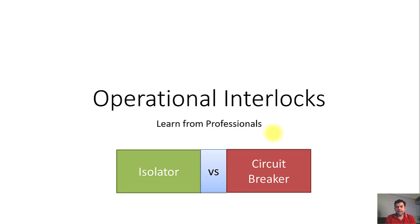Welcome friends. What we have just seen is an example of operation of the isolator on load. It means that the breaker was closed and the operator was trying to close the isolator on load. Since the isolator is not an on-load device, it caused a huge arc, resulting in damage to the circuit breaker itself — the circuit breaker was blasted because of this huge arcing.